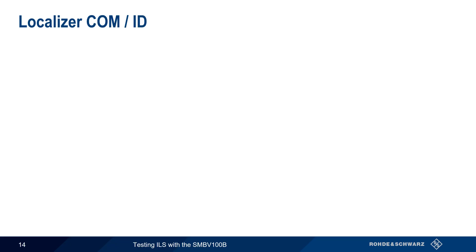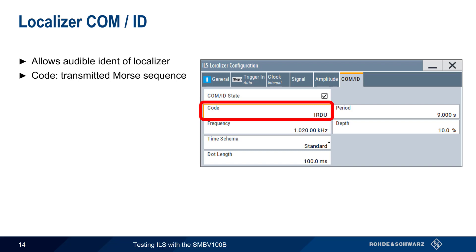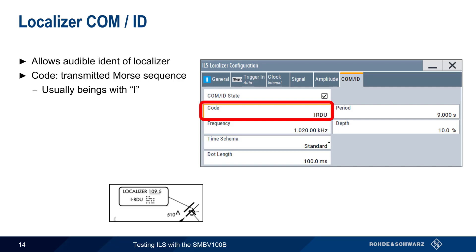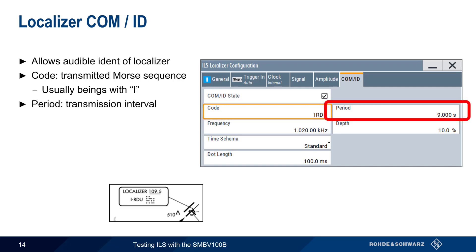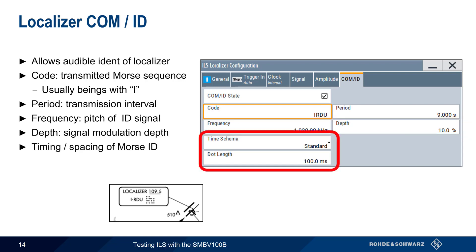The last tab in localizer configuration is COMID. The COMID signal allows the pilot to audibly identify the localizer using Morse code. Code is the transmitted Morse sequence – note that for localizer, this usually begins with the letter I to avoid confusion with the ID from VOR stations. Period defines the interval between transmissions of the Morse ID. Frequency controls the pitch of the demodulated signal, and depth is the AM modulation depth. Time schema and dot length control the timing and spacing of the DITs and DAHs used in the Morse ID; these can be left at standard values or defined by the user.